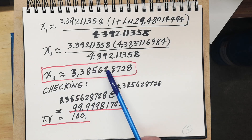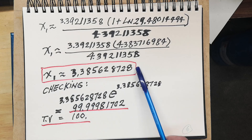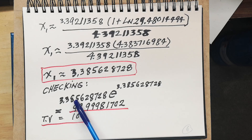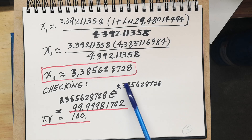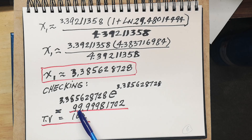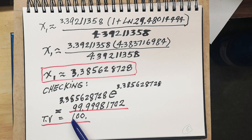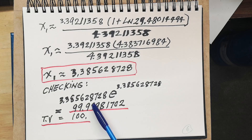Stopping at this point and checking if this value is okay: 3.385628728 times e raised to the same value gives 99.99981702. The true value is n equal to 100, so it's already getting very close.